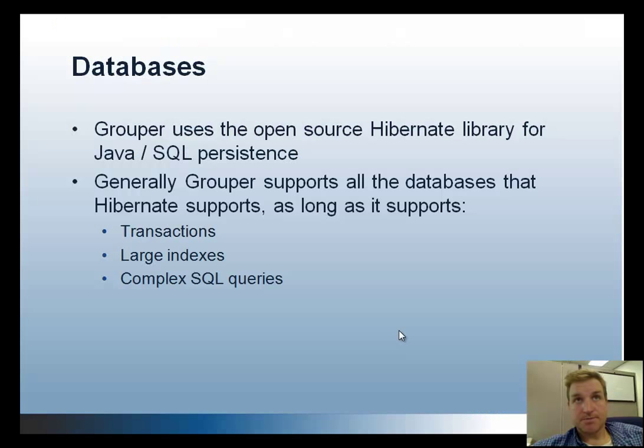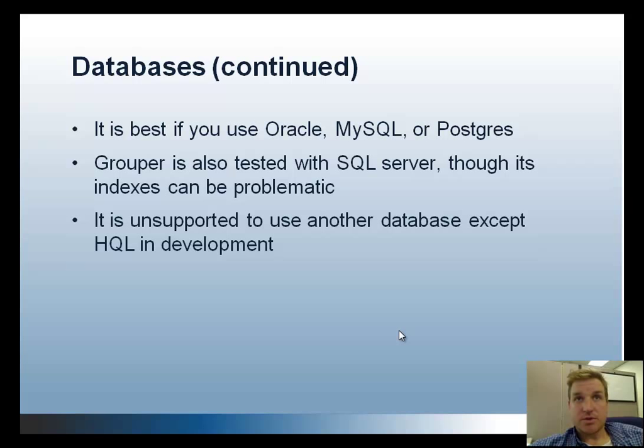For databases, Grouper uses the open source Hibernate library for Java to SQL persistence. Generally, Grouper supports databases that Hibernate supports, although it does need transactions, large indexes, and complex SQL queries. However, it's best if you use Oracle, MySQL, or Postgres. Grouper is tested with SQL Server, though some things can be problematic, including indexes. It's unsupported to use any other database except HQL in development, and you shouldn't use HQL in production.